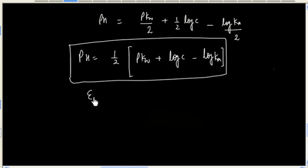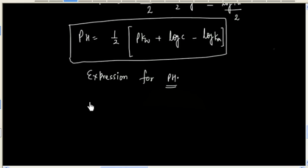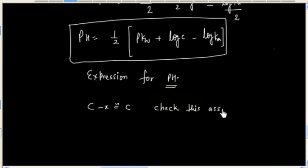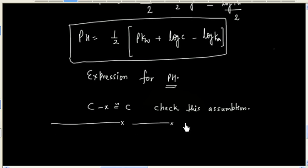This is the expression for pH in the case of a weak acid and strong base salt. We also used the assumption that C minus X is approximately equal to C, so whenever you are solving a problem, you have to check this assumption. If this assumption holds, then you can apply this formula directly.